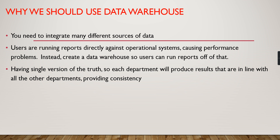Having a single version of truth means each department produces results that are aligned with the other departments. For example, you have a sales report and different teams produce results based on different products. The product name might be different in one department's report versus another department's report, so there will be different values. To avoid this, the data should be fetched from a single table or single point.